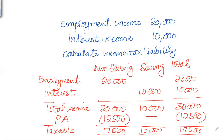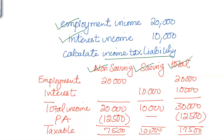Now let's include saving income as well. In this example, we have non-saving income of £20,000 and saving income — interest income — of £10,000; calculate income tax liability. As there are two different sources of income, it's better to prepare a pro forma. The first column is non-saving income, the second is saving income, and then a total column. Employment income is part of non-saving income; interest income is part of saving income. Total non-saving income is £20,000, total saving income is £10,000, so total income is £30,000.